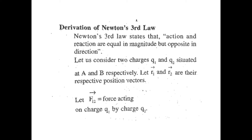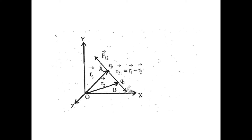Let us consider two charges q1 and q2 situated at points A and B in the xy-plane. Let r1-vector and r2-vector be their respective position vectors. As shown in the figure, F12-vector represents the force acting on charge q1 due to charge q2, and F21-vector is the force acting on charge q2 due to charge q1.